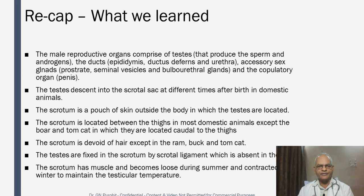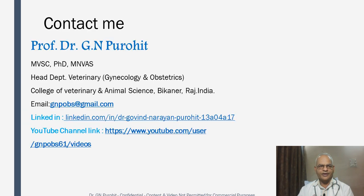To recapitulate today's lecture: the male reproductive organs comprise the testes that produce sperm and androgens; the ducts carrying sperm — epididymis, ductus deferens, and urethra; the accessory sex glands — prostate, seminal vesicles, and bulbourethral glands; and the copulatory organ, the penis. The testes descend into the scrotal sac at different times in domestic animals. The scrotum is located between the thighs in most domestic animals, except the boar and tomcat. The scrotum is devoid of hair except in the ram, buck, and tomcat. The scrotal ligament fixing the testes is absent in the bull. The scrotum becomes loose during summer and contracted during winter to maintain testicular temperature.